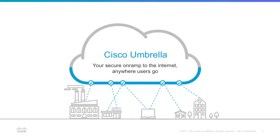The simplest way to describe Umbrella is that it's really just providing that first line of defense against threats on the internet. Basically, anywhere that you are accessing the internet, that traffic goes to Umbrella first, so it becomes your secure on-ramp to the internet. That means we're able to block users from connecting to any sites that are hosting malware or phishing campaigns, so you're able to block threats before they ever reach your endpoints.